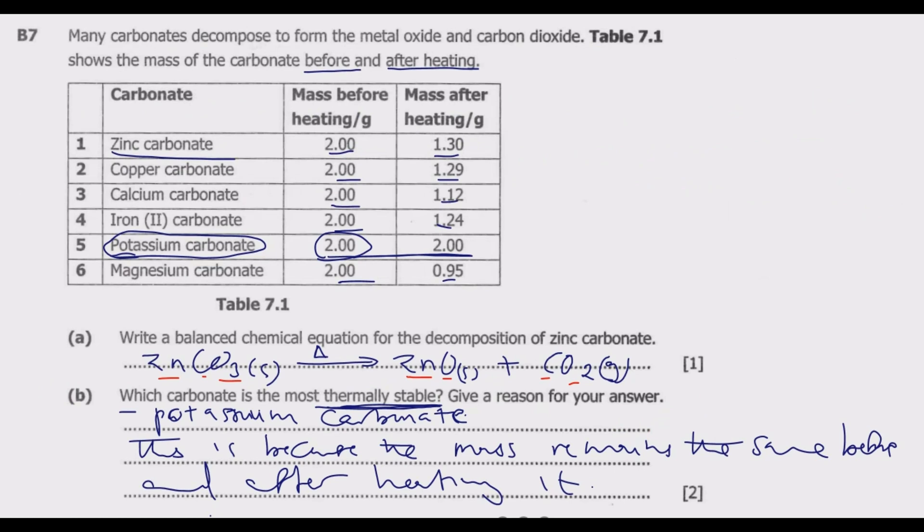Number one: aluminum oxide. Number two: silicon oxide. Number three: magnesium oxide. So these are the three key oxides that are used as refractory material.